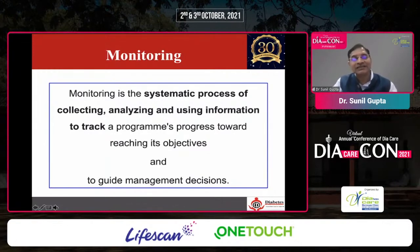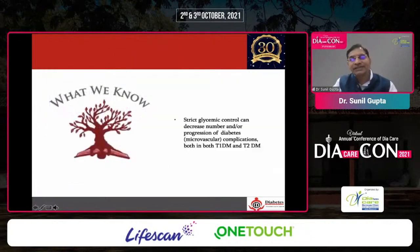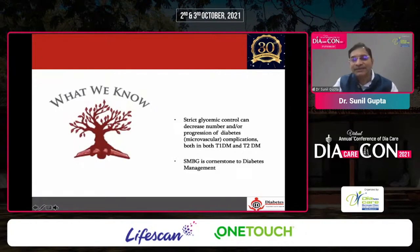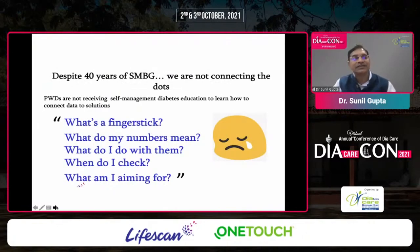That is the theoretical definition of monitoring. We know strict glycemic control can decrease progression of micro as well as macroangiopathy in both type 1 and type 2 diabetes. SMBG — self-monitoring of blood glucose — is a cornerstone to diabetes management. But despite 40 years of self-monitoring of blood glucose, we are still not able to connect the dots.